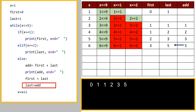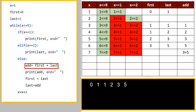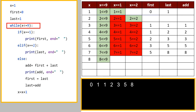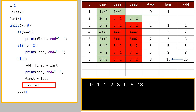Value of last is 5. Value of x becomes 7. 7 less than equal to 9 — yes. 7 equal equal to 1 — no. 7 equal equal to 2 — no. Value of add becomes 3 plus 5 equals 8, and 8 is displayed on the output screen. First gets 5, last gets 8. Value of x becomes 8. 8 is less than equal to 9 — yes, the body of the loop executes. 8 equal equal to 1 — no. 8 equal equal to 2 — no. Value of add is 5 plus 8 equals 13, and 13 is displayed on the output screen. First gets 8 and last gets 13.